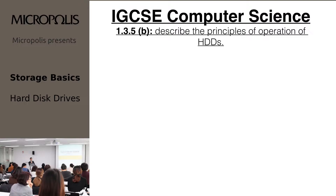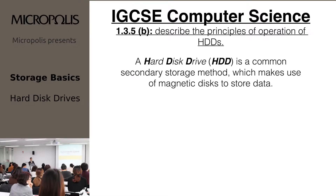Let's jump into HDD. A hard disk drive is a common secondary storage method that makes use of magnetic disks to store data. Data is stored in a digital format on the magnetic surfaces of the disks, which we refer to as platters.